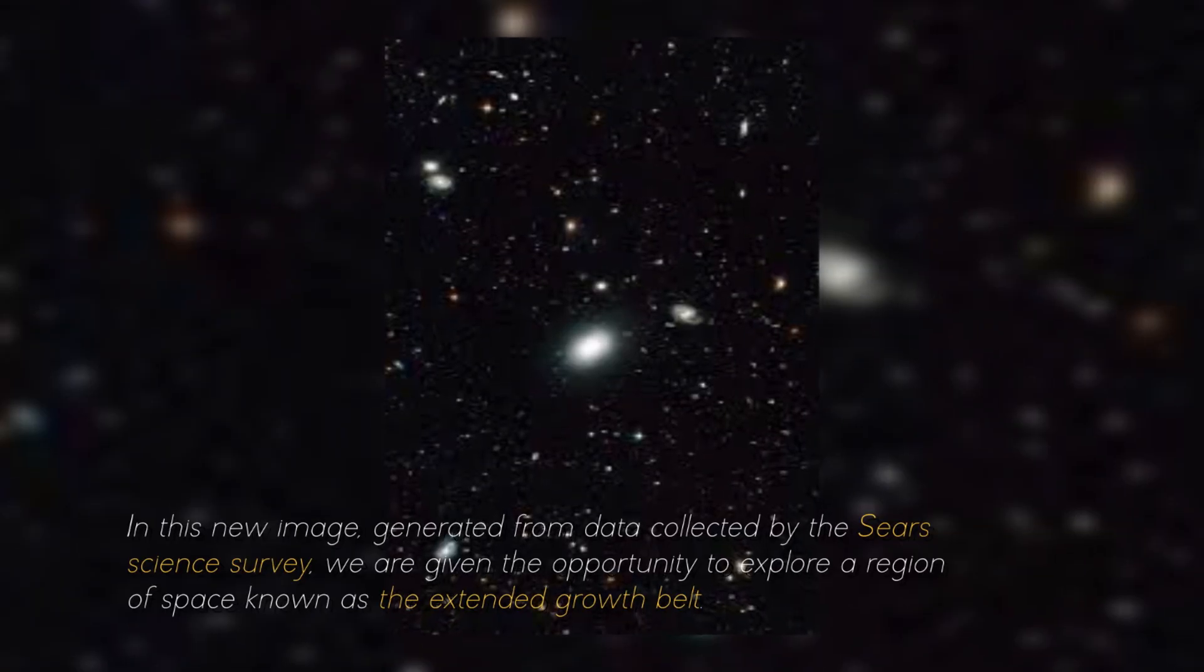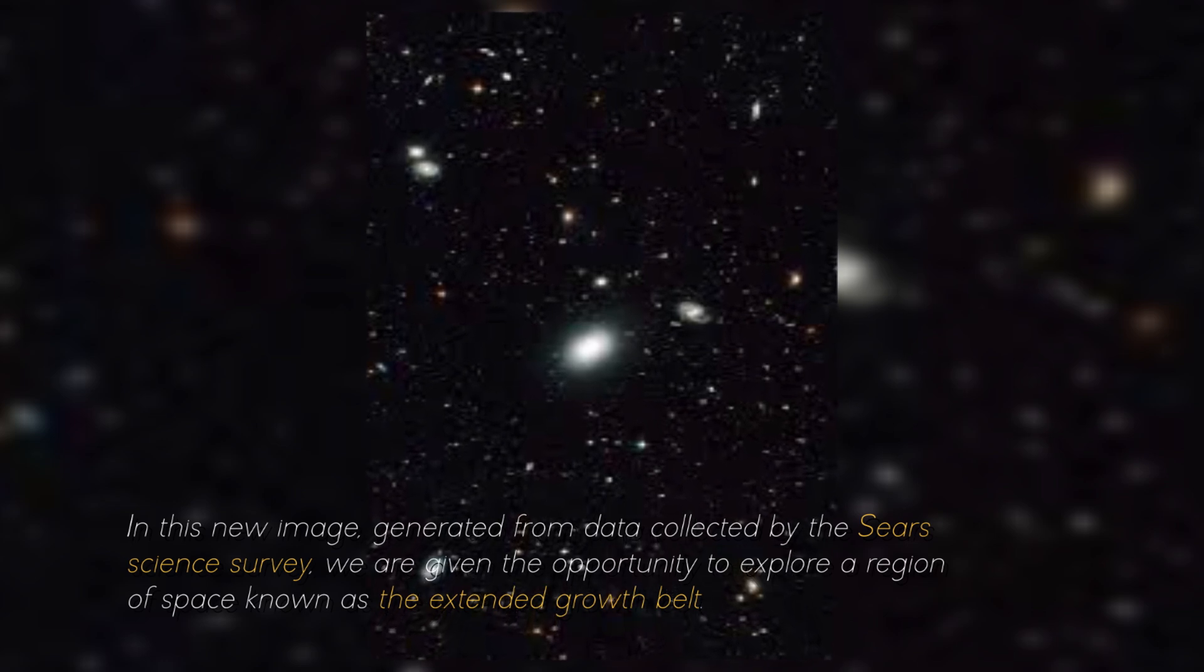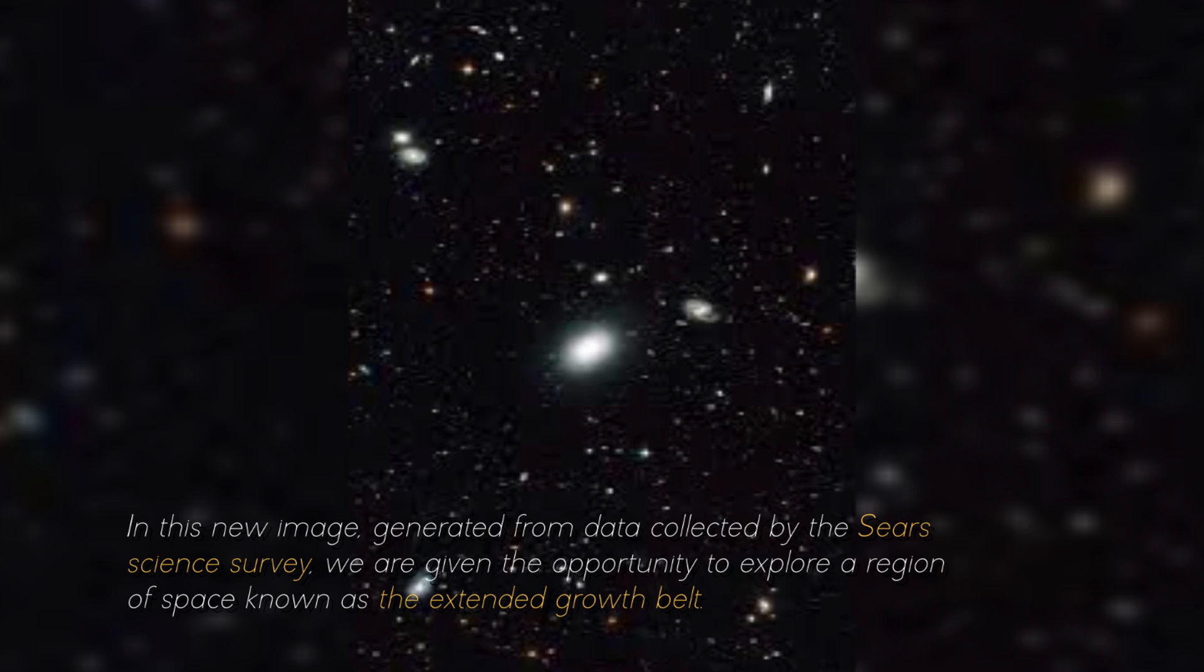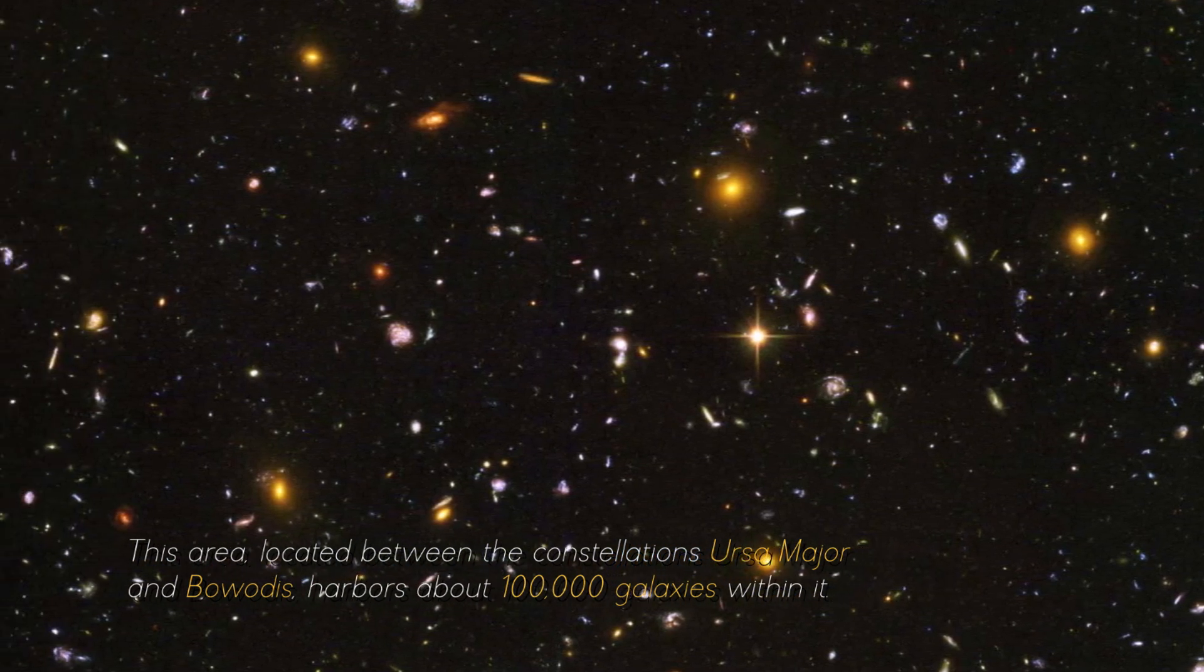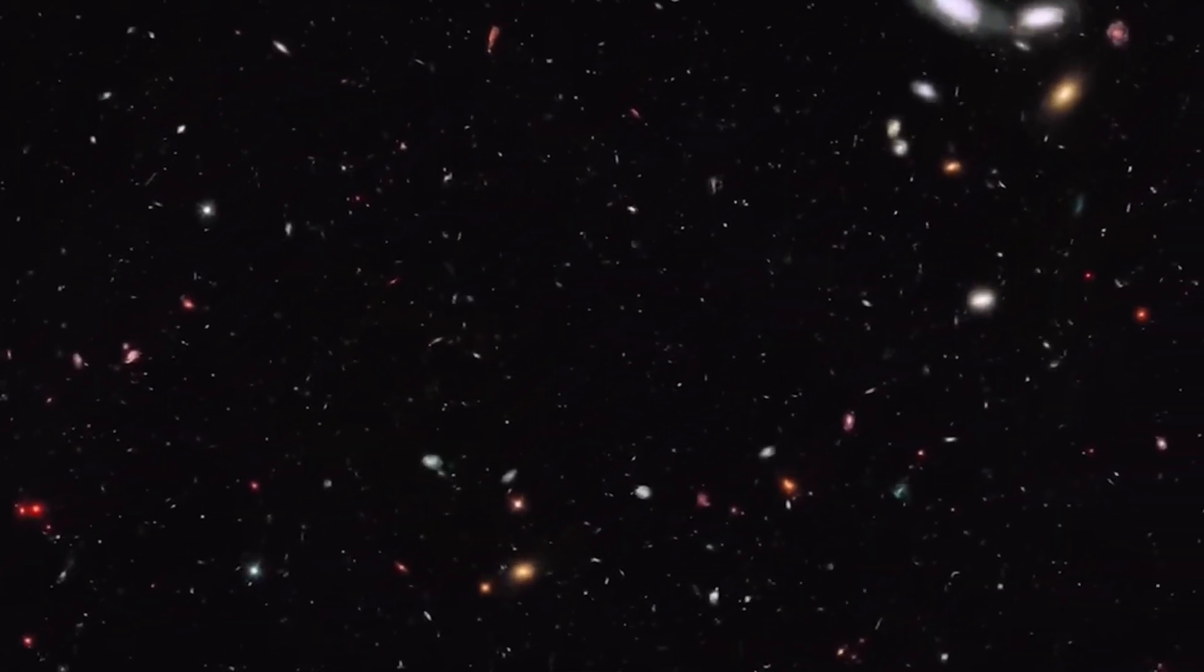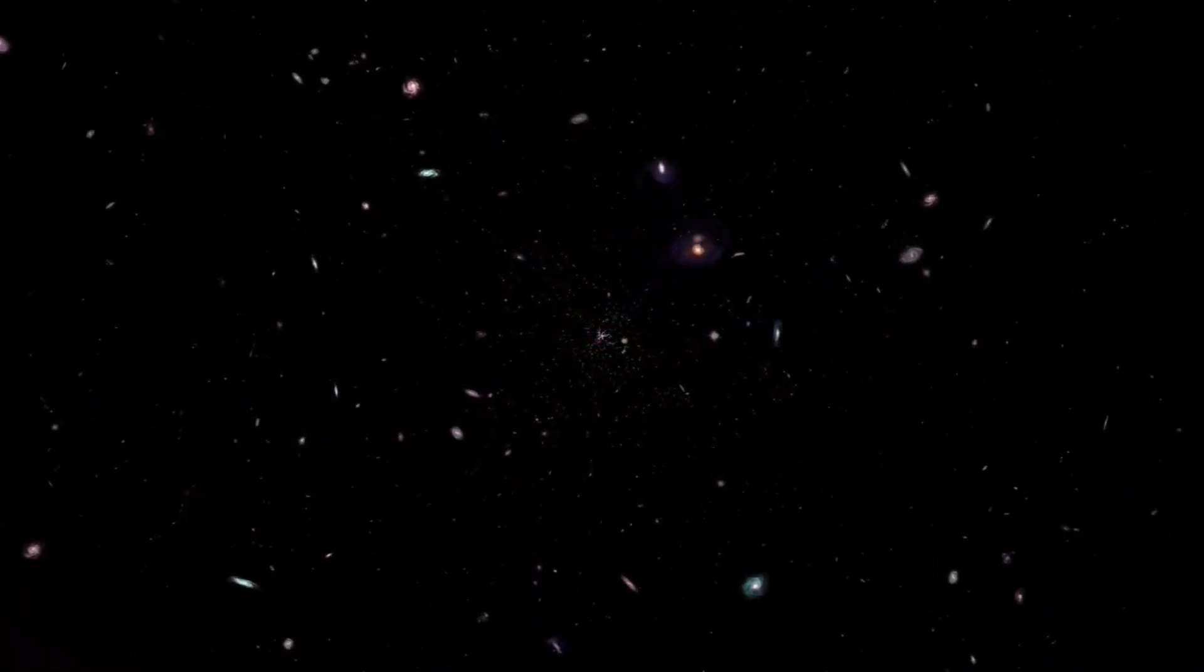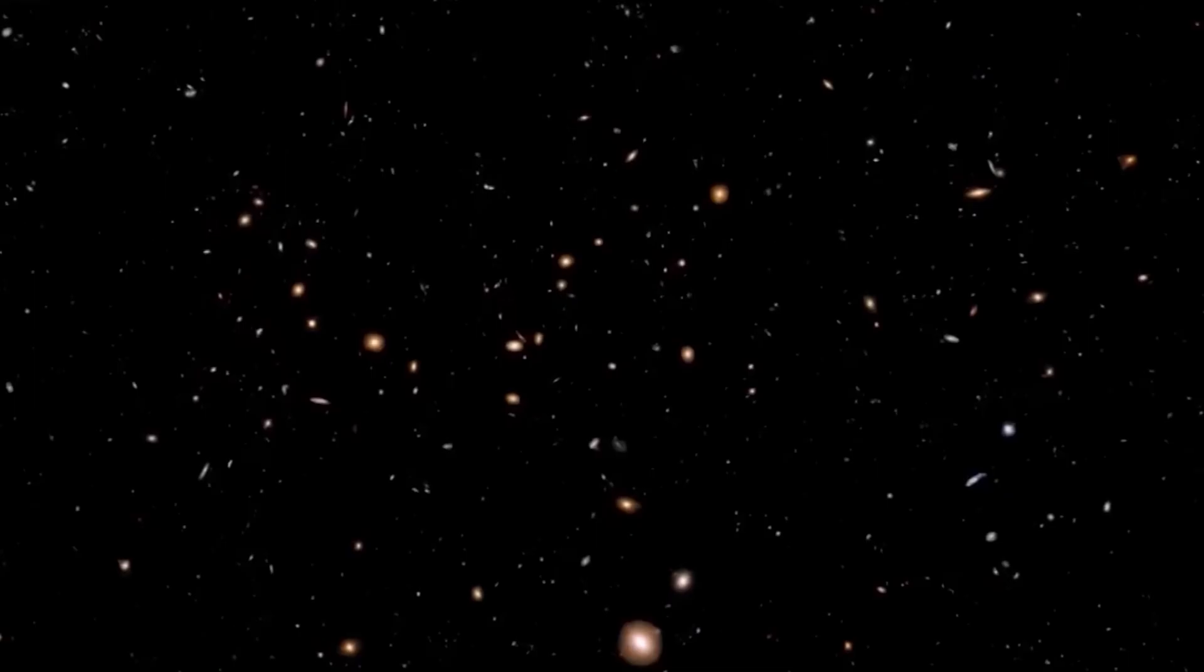In this new image, generated from data collected by the CEERS Science Survey, we are given the opportunity to explore a region of space known as the Extended Groth Strip. This area, located between the constellations Ursa Major and Boötes, harbors about 100,000 galaxies within it. Prominently, among all these galaxies, Maisie's Galaxy is presented as a representative example of the primitive galaxies that the James Webb Space Telescope is able to study.